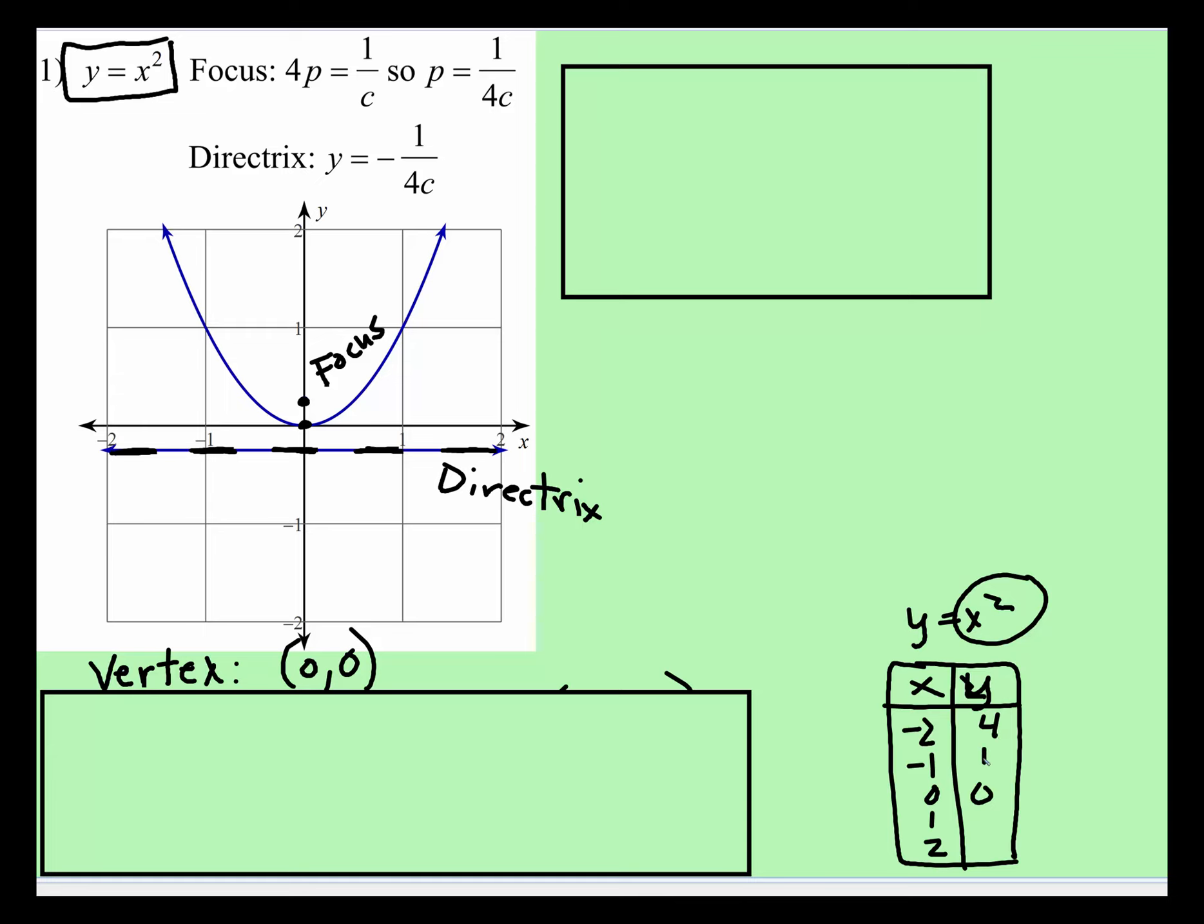negative 1 squared is positive 1, 1 squared is 1, 2 squared is 4, and then that shapes the basic parabola.